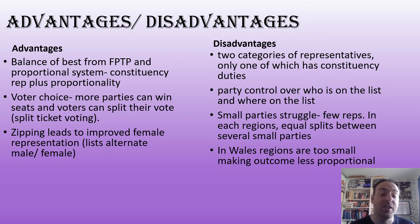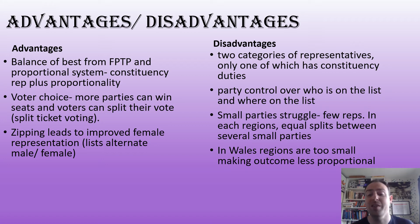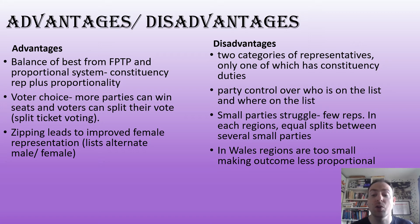Disadvantages of AMS: we get two different types of representative, which creates a kind of inequality — one group has constituency duties whilst the other doesn't. It can also be said to give parties too much control, because they control who's on the list and in what order. Small parties tend to struggle because there are few representatives in each region, and an equal split between small parties can reduce their representation. This has particularly been a problem in Wales, where the regions may be too small, leading to slightly less proportional outcomes than in Scotland.